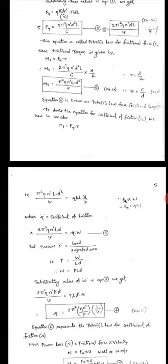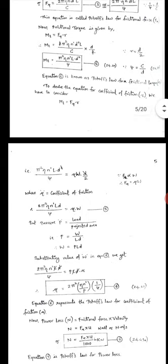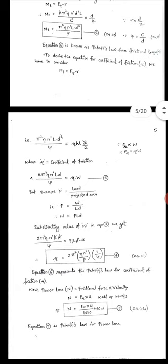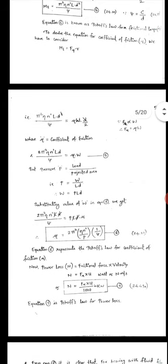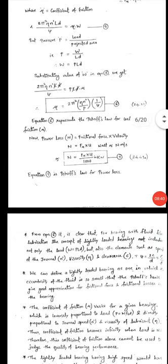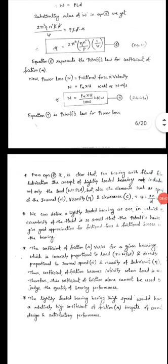And power loss N is friction loss times velocity, F_mu times U in watts or newton meter per second. Power loss N is F_mu times U by thousand in kilowatts, equation number 7. So equation 7 is Petroff's equation for power loss. From equation 6 it is clear that bearing with fluid film lubrication.